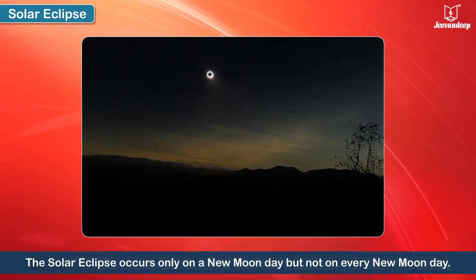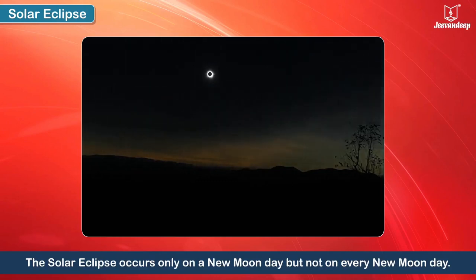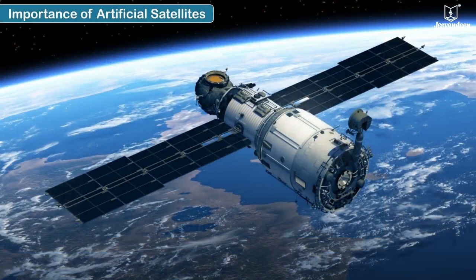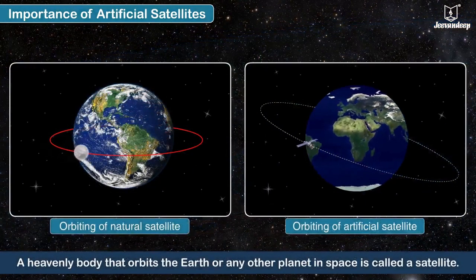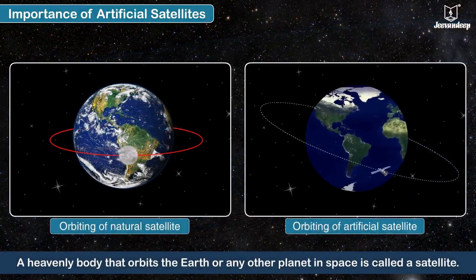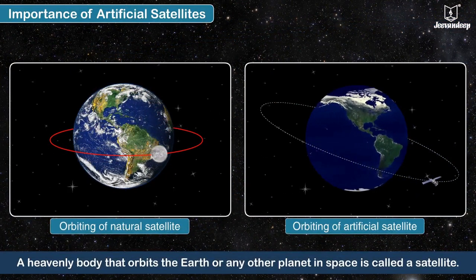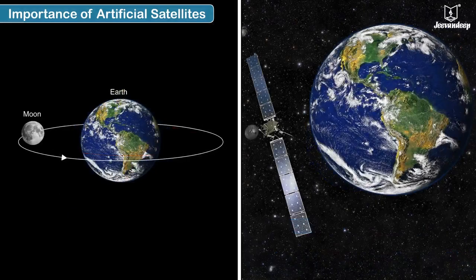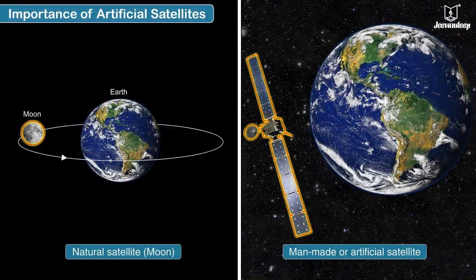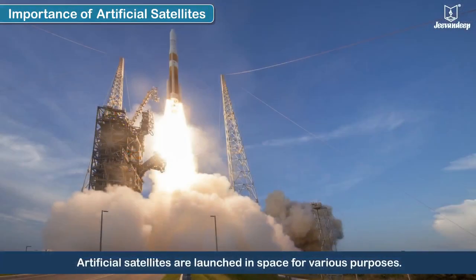The solar eclipse occurs only on a new Moon day, but not on every new Moon day. Artificial satellites and their importance: a heavenly body that orbits the Earth or any other planet in space is called a satellite. Satellites may be natural like the Moon, or man-made. Artificial satellites are launched in space for various purposes.